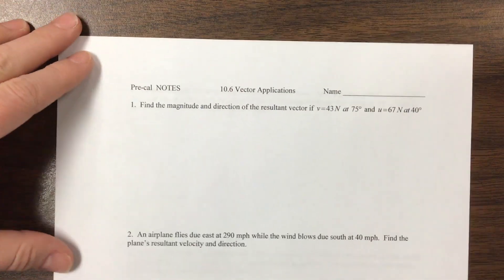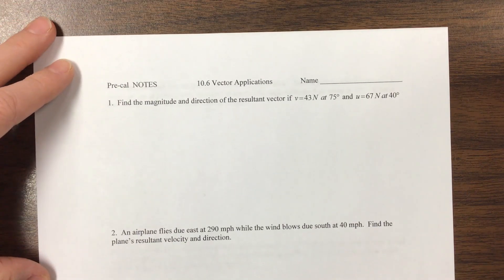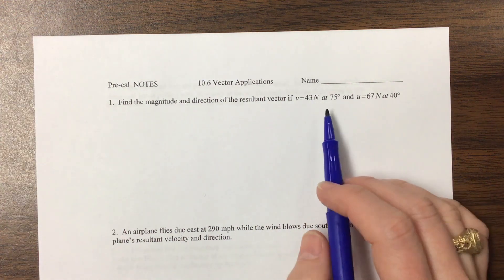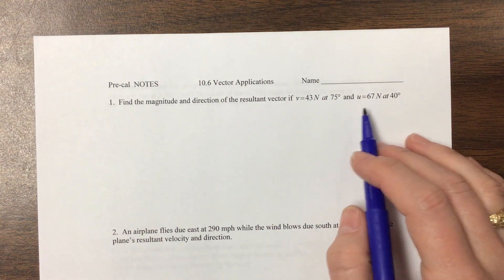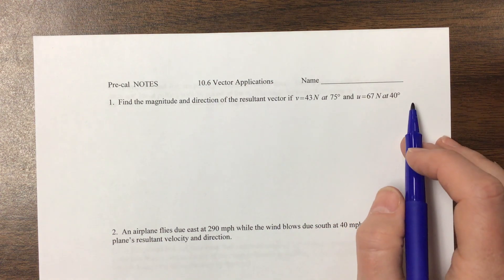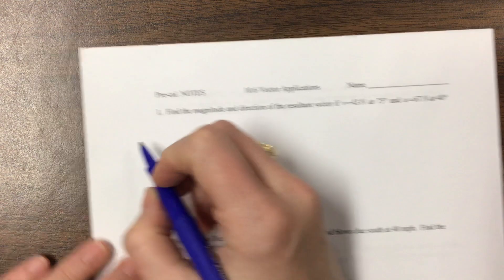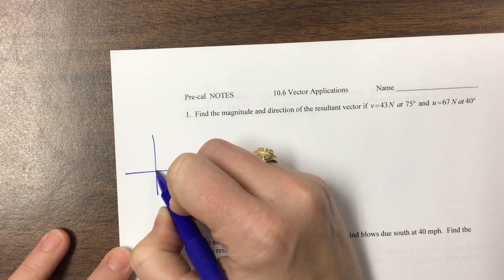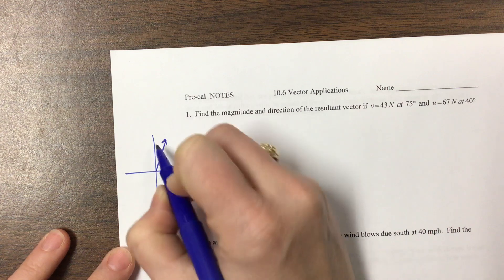So the first one says, find the magnitude and direction of the resultant vector if V is 43 newtons at 75 degrees and U is 67 newtons at 40 degrees. Okay, so what I would do to begin with here is that we've got, so this is at 75 degrees. That one is V.